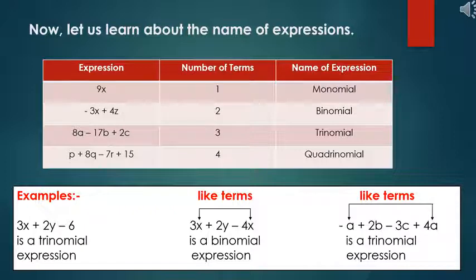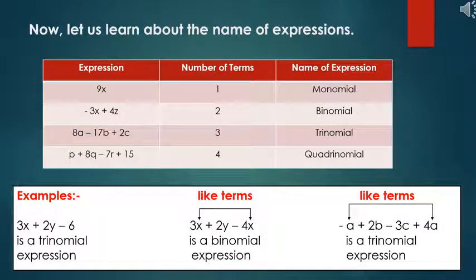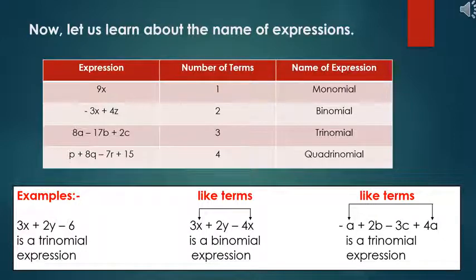Next, 8a minus 17b plus 2c has 3 terms, and the name of the expression is trinomial. Next, p plus 8q minus 7r plus 15 has 4 terms, and the name of the expression is quadrinomial.